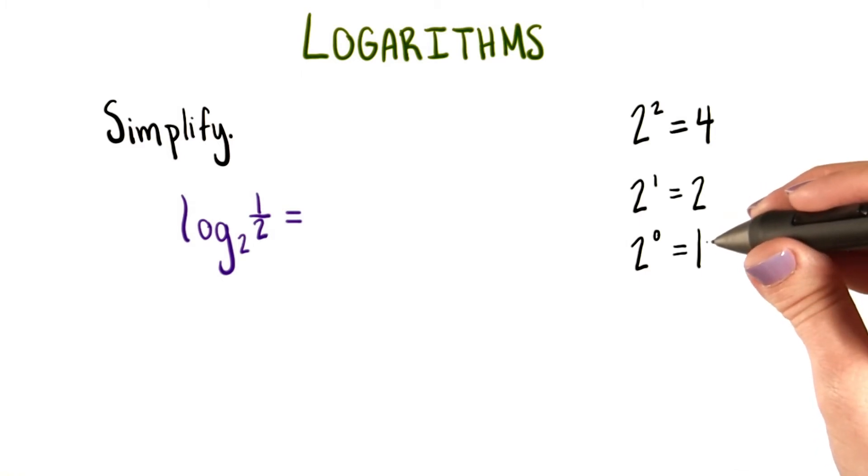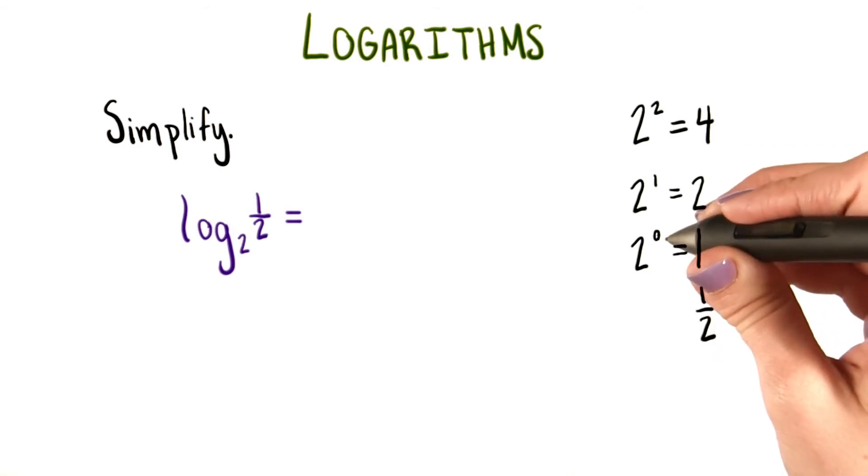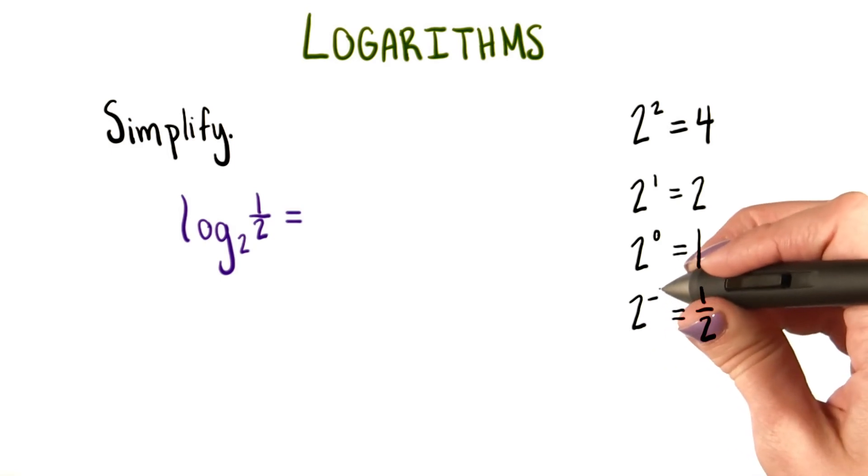So if we need to halve 1 to get 1 half, which is what we're looking for, then we need to decrease this exponent one more time. So that means 1 half should be equal to 2 to the negative 1.